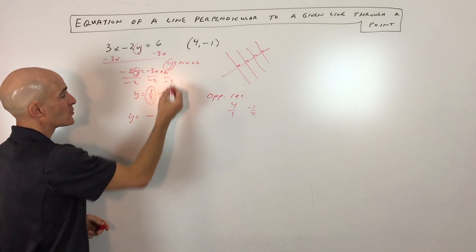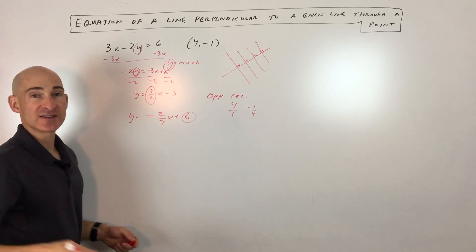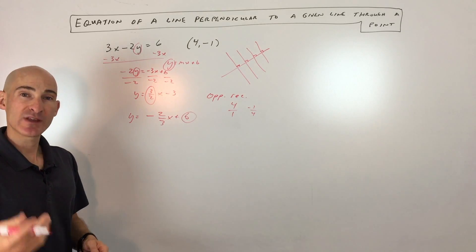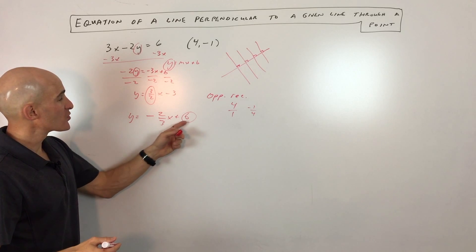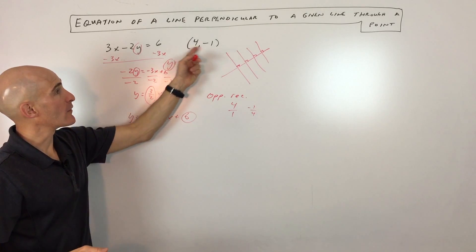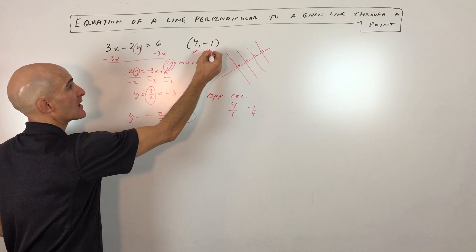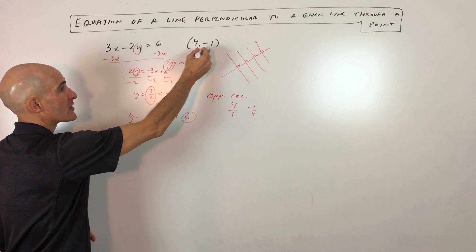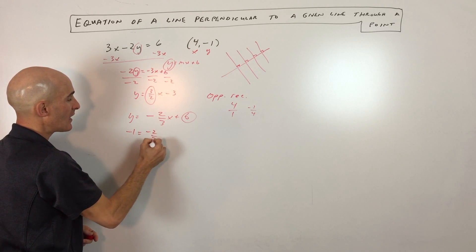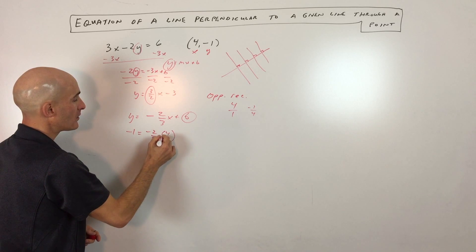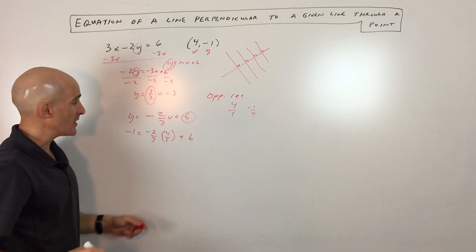We know the slope of our line is negative 2 thirds, so we put that in for m in y equals mx plus b. We don't know b — that's the y-intercept, where it crosses the y-axis. To solve for b, we use the point (4, -1): 4 is the x-coordinate and negative 1 is the y-coordinate. We plug negative 1 in for y and 4 in for x.